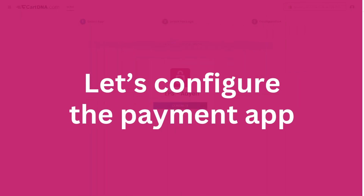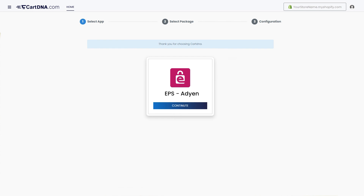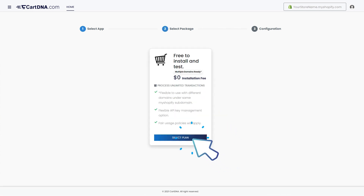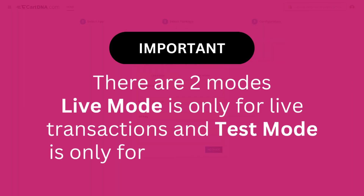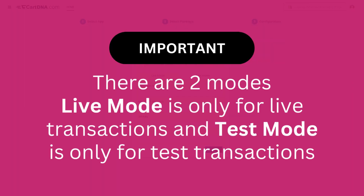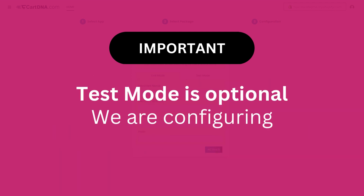Let's configure the payment app. Click on the Continue button to go to the next step. Click on the Select plan button. Important: there are two modes. Live mode is only for live transactions and test mode is only for test transactions. Test mode is optional.